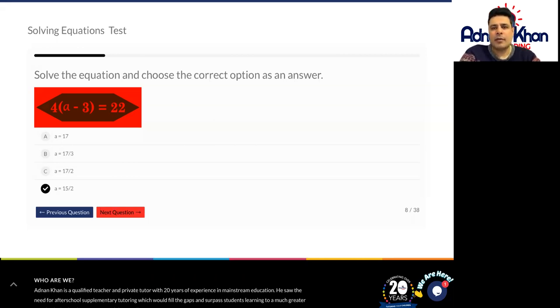The question says four open brackets a minus three closed brackets equals 22. So what we can do is we can open up the brackets first. So four times a is 4a minus four times three is 12, then equals 22.